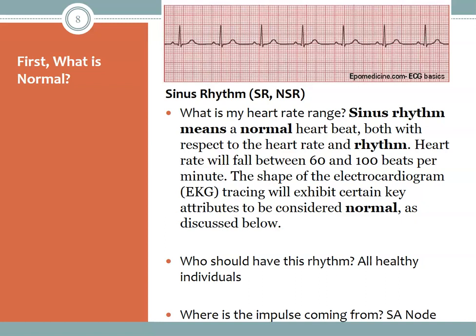On a six-second strip, you can count the R waves to estimate the heart rate. For example, counting one, two, three, four, five, six, seven R waves — seven times ten is seventy — so that strip shows approximately 70 beats per minute.